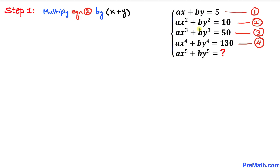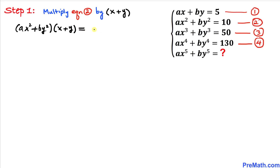Let's go ahead and multiply both sides of equation 2 by (x + y). So we write ax² + by² times (x + y) equals 10 times (x + y).